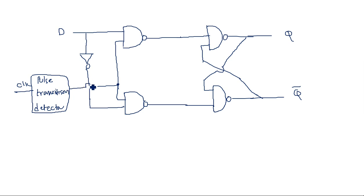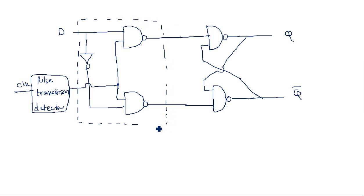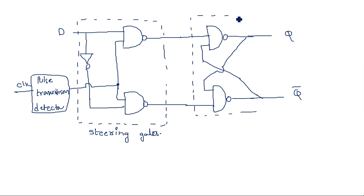If it detects a rising edge, then it is a positive edge-triggered flip-flop. If it detects a negative edge trigger, then it is a negative edge or falling edge-triggered D flip-flop. The first two gates, as mentioned in the previous videos, are known as controlling gates or sometimes also referred to as steering gates. The second set of gates in this D flip-flop is known as a memory location or latch, where the input we are going to store is held.